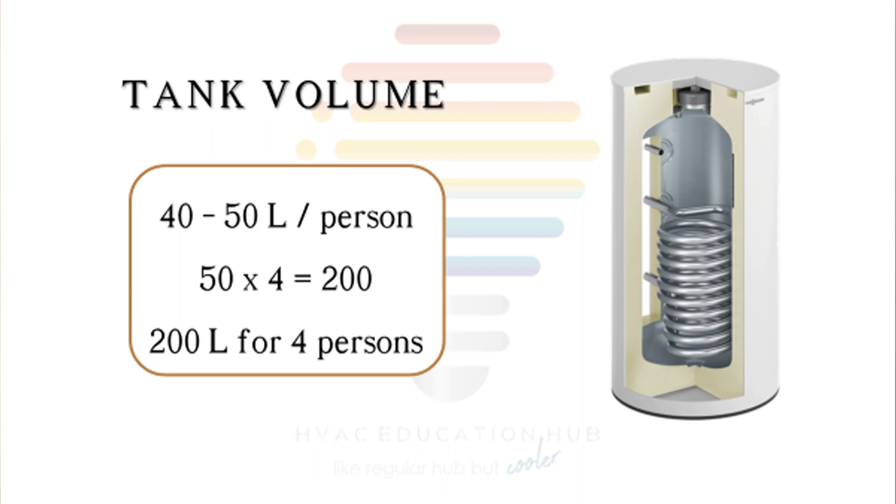Approximately 40 to 50 liters per person in your household is a rough calculation to determine how big your domestic hot water tank must be. In our example, we'll have four persons and a 200 liter hot water tank.